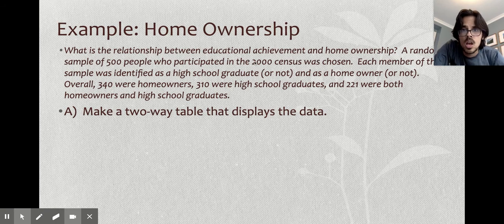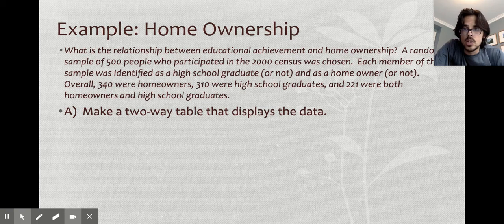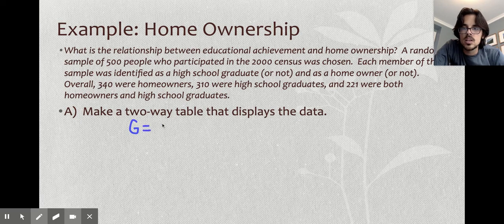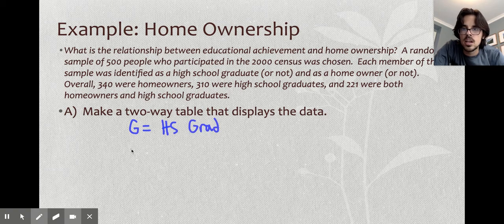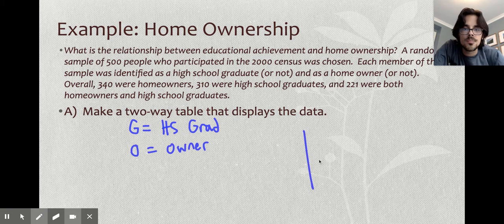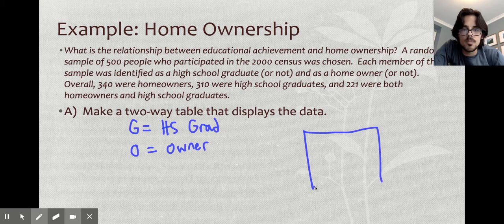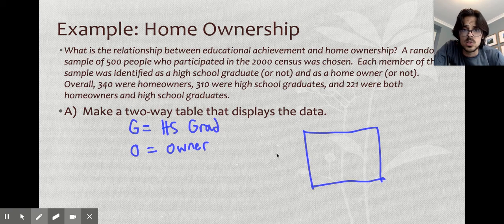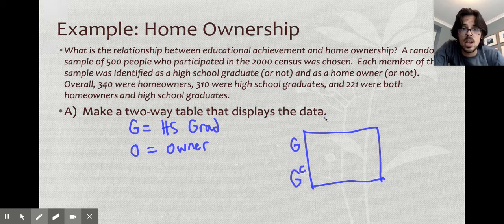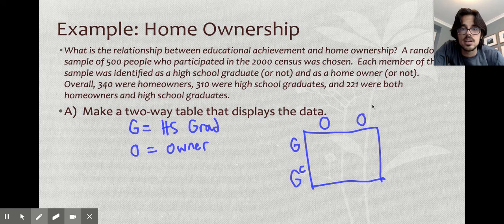In this problem here, fresh example, we're looking at home ownership versus whether or not you're a high school graduate. So we have two events that we care about here and they don't define them for us. I'm going to go ahead and put letters just so I can not have to write out the words every single time. So G is going to be that you're a high school grad and then O is going to be that you're an owner, like you own a home. With the two-way table, we're going to have two events and it doesn't really matter which one goes each way. I'm going to make grad go this way.